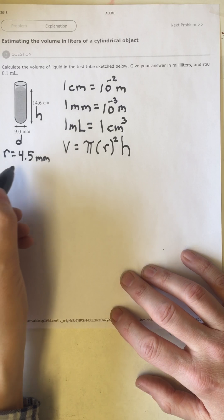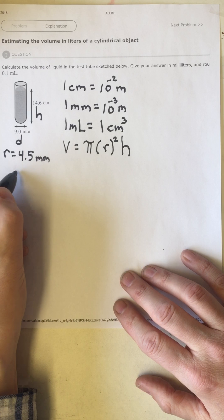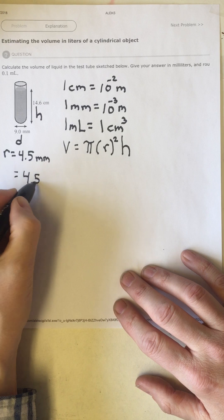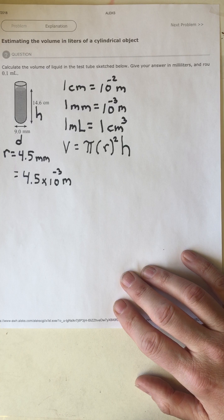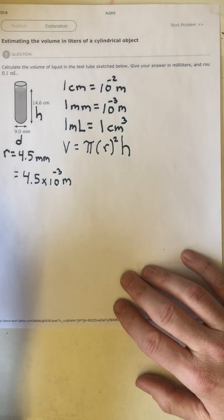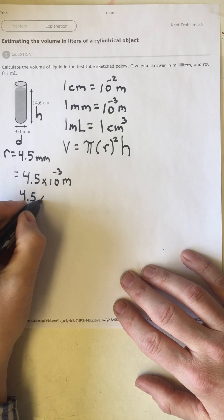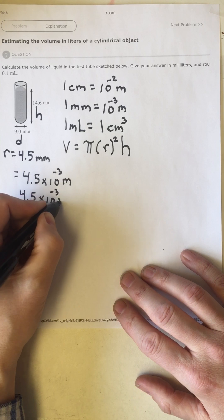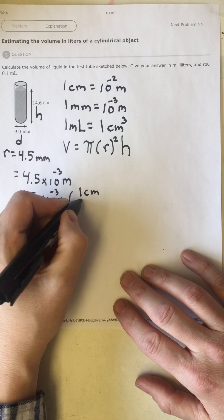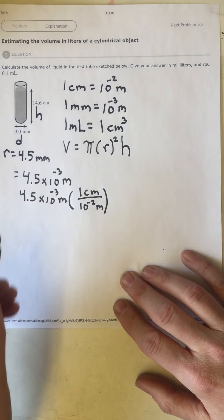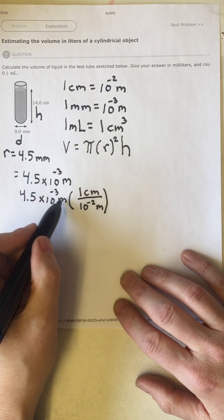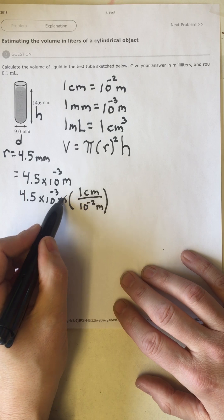The radius is 4.5 millimeters, which is the same as 4.5 times 10 to the negative 3 meters, since milli means 10 to the minus 3. Now let's convert that radius into centimeters: 4.5 times 10 to the negative 3 meters, and since 1 centimeter equals 10 to the negative 2 meters, we apply dimensional analysis — meters divided by meters cancels.